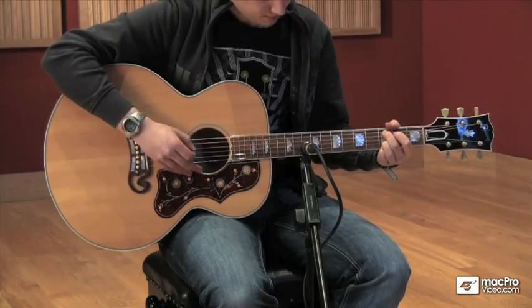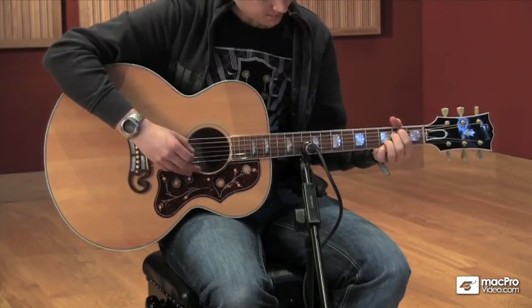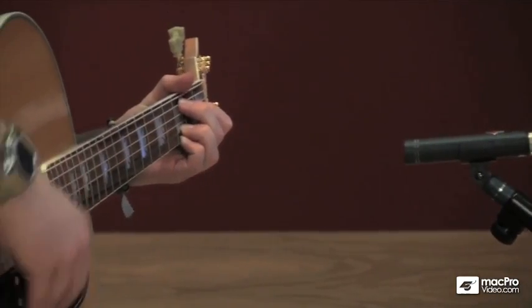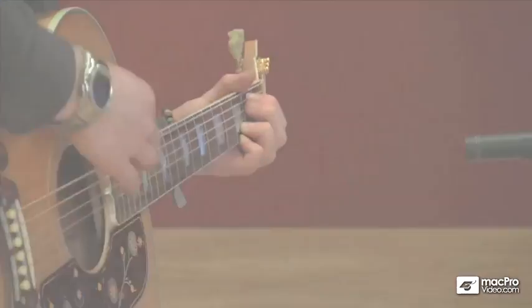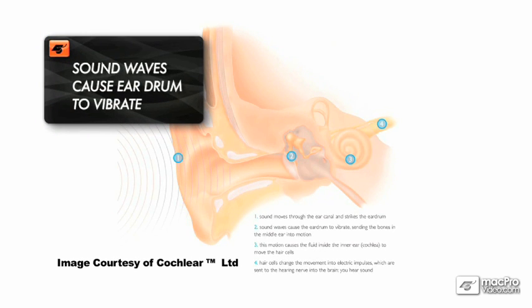Sound travels in waves which are created by vibration. A guitar string is plucked, vibrates, and causes the air molecules around it to vibrate as well. These eventually reach our eardrums, which also vibrate, and then the brain does some very clever stuff and interprets these vibrations into what we perceive as sound.